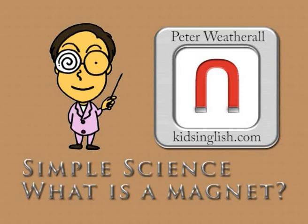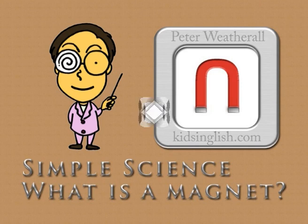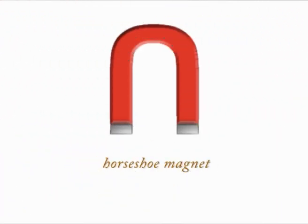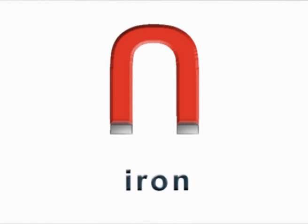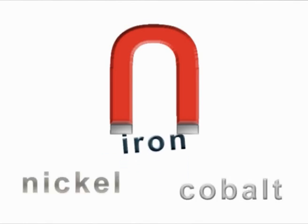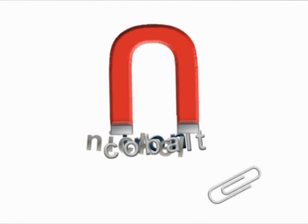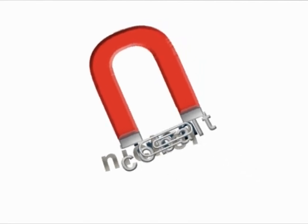Simple Science. What is a magnet? A magnet has a force field around it that can attract iron and other objects, such as those made of nickel and cobalt. That is why you can use a magnet to pick up a paper clip.